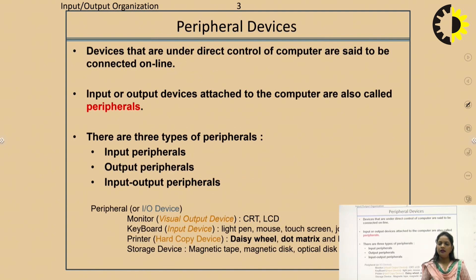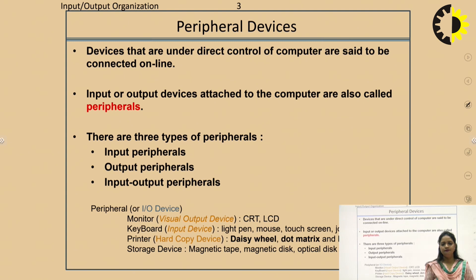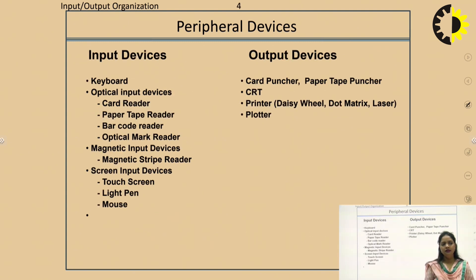Let's start with the introduction to peripheral devices. Peripheral devices are input-output devices. We have three types: input peripheral devices, output peripheral devices, and both input-output peripheral devices. Examples of input devices include keyboard, optical input devices like card reader, paper tape reader, barcode reader used for shopping to read product information, magnetic tapes, and screen.